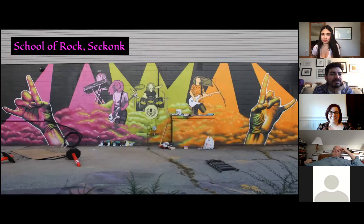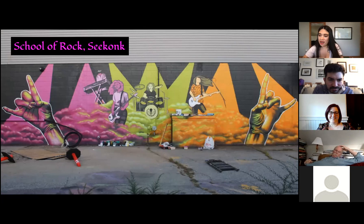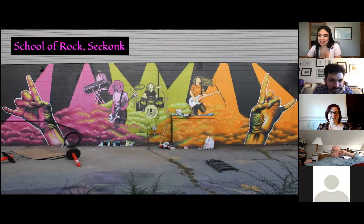This is a mural I did in 2019 at School of Rock in Seekonk, Massachusetts — 44 feet wide and 10 feet high, completed in spray paint and exterior latex paint. The design was made in consultation with two staff members who manage the location. The goal was to create a mural to instill excitement and pride for the students, with outcomes including immediate visibility for the school's new location and positive response from students, families, and community members.